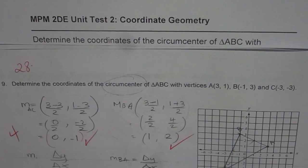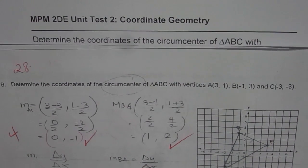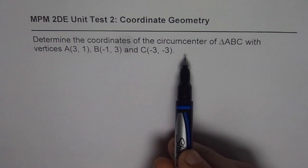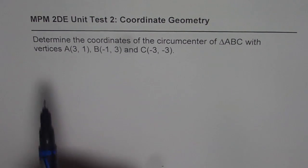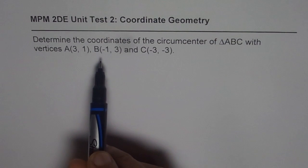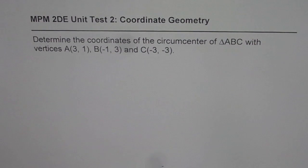Let us now understand how to determine coordinates of the circumcenter of a triangle. Here is a question from a Maths test paper, Coordinate Geometry, Grade 10. The question is: determine the coordinates of the circumcenter of triangle ABC with vertices A(3, 1), B(−1, 3), and C(−3, −3).